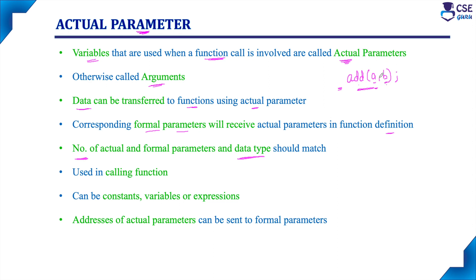For example, here we have mentioned two parameters, so in the formal parameter list also we have to mention only two parameters. But formal parameters should be mentioned along with their data type — that is the difference. The data type of the formal parameter and actual parameter should match. If you have declared 'a' as integer data type in the actual parameter but used 'float a' in the formal parameter, that is wrong. Both the number of parameters and their data types must match.